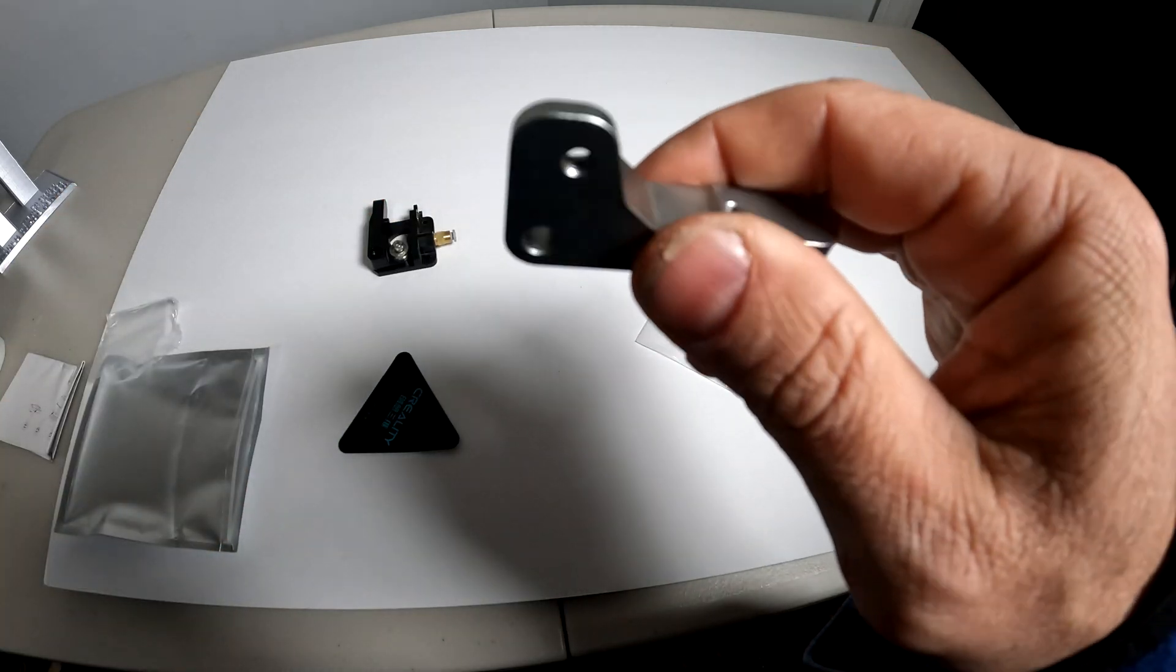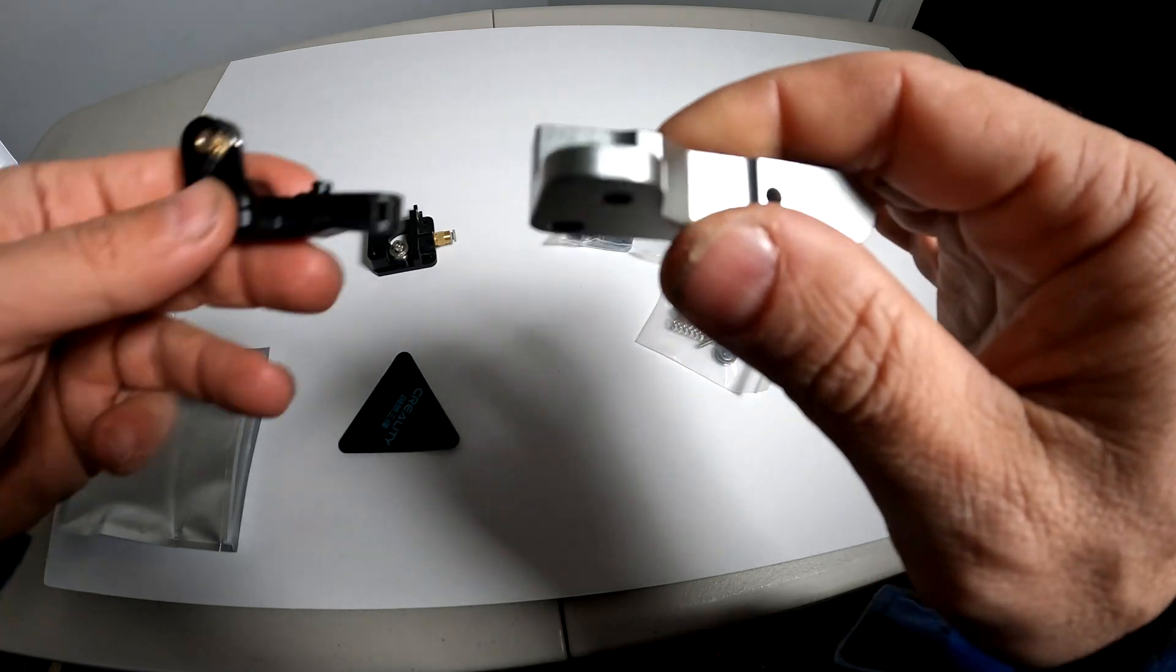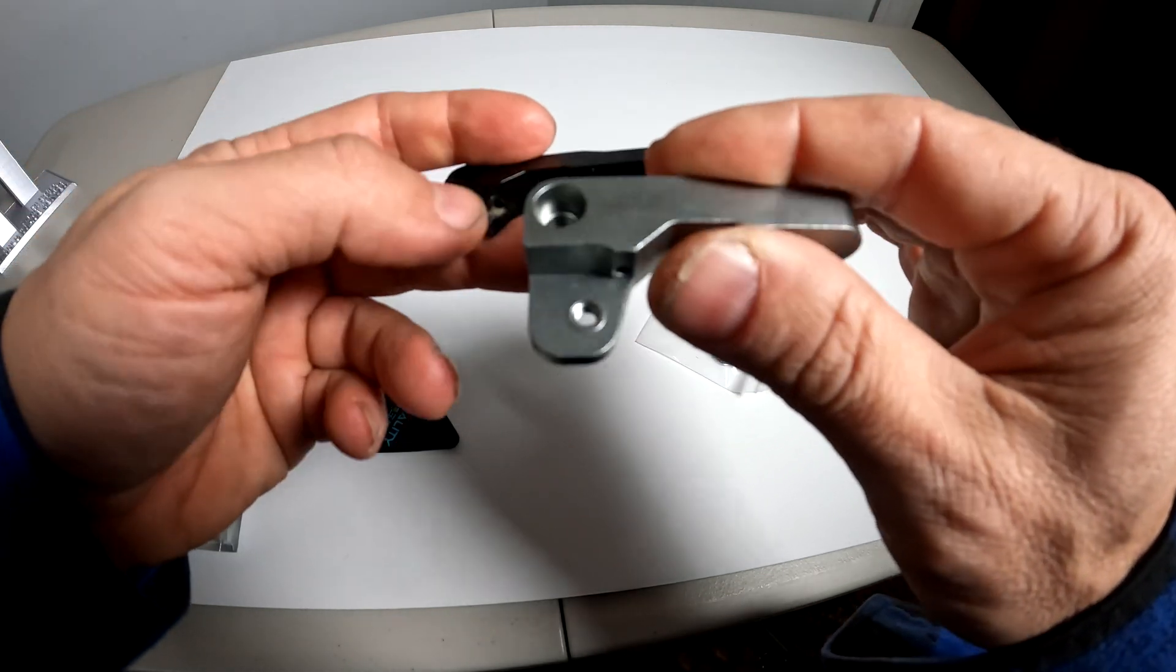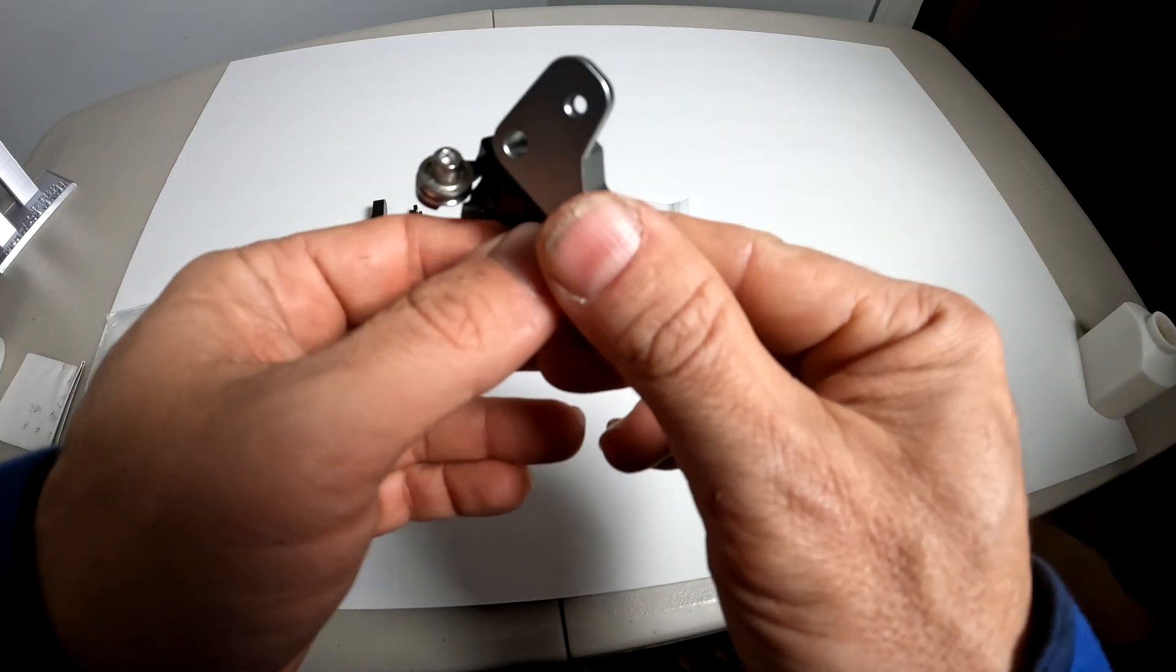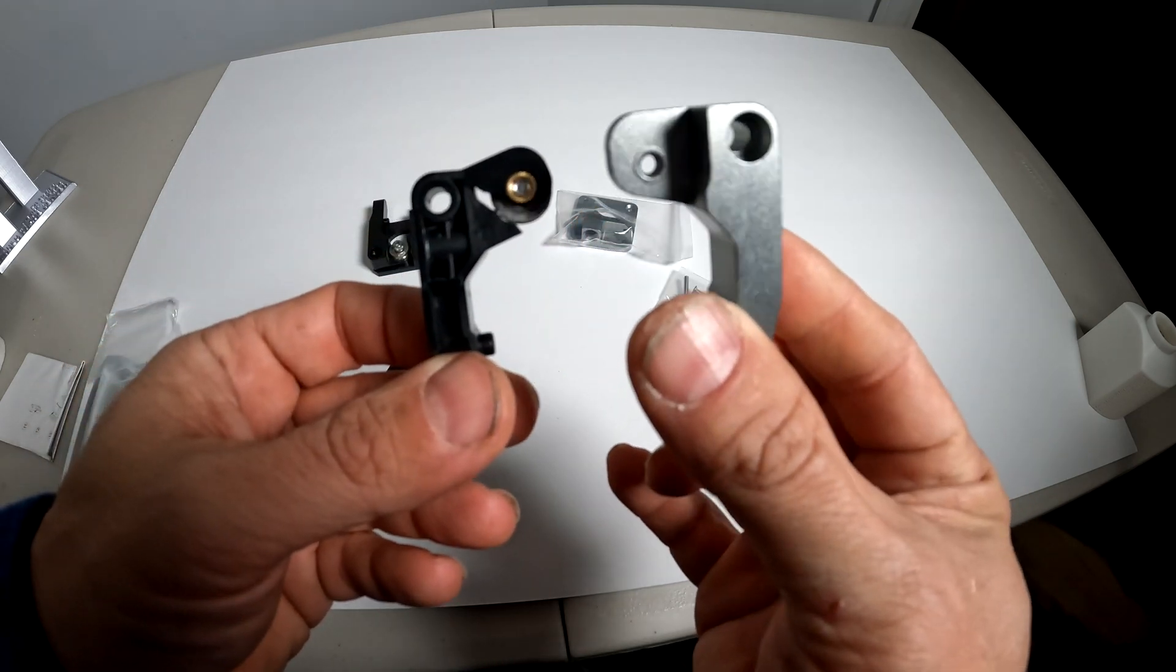As you can see it is metal not plastic and it is a whole lot better built than the cheap plastic junk that came with your 3D printer's extruder.